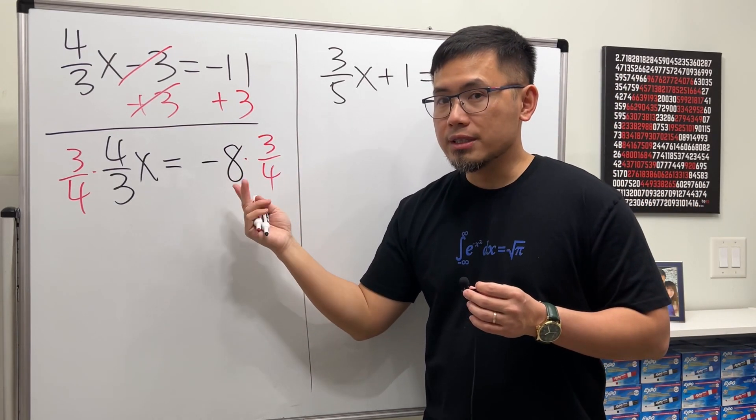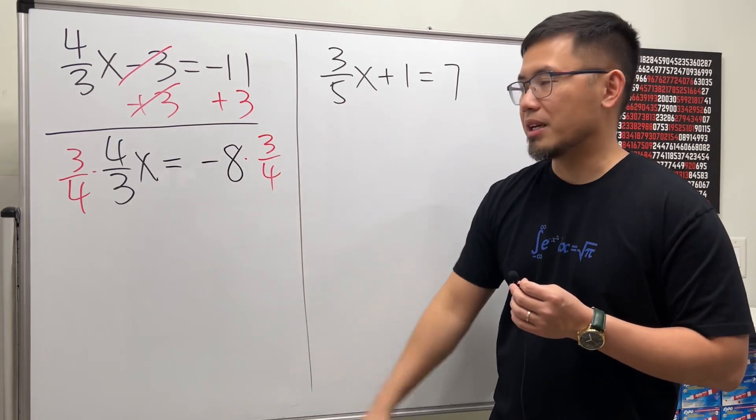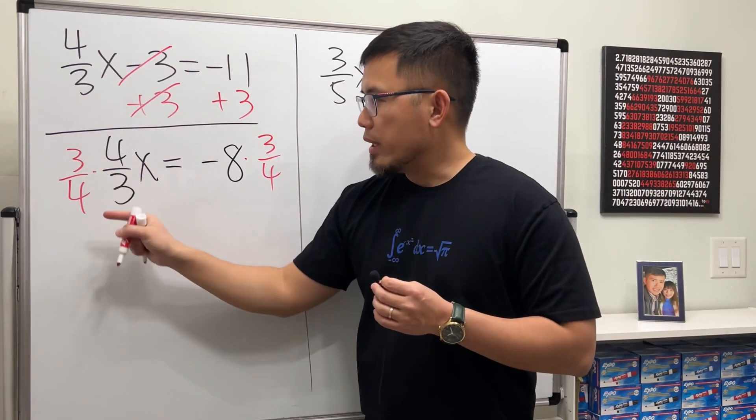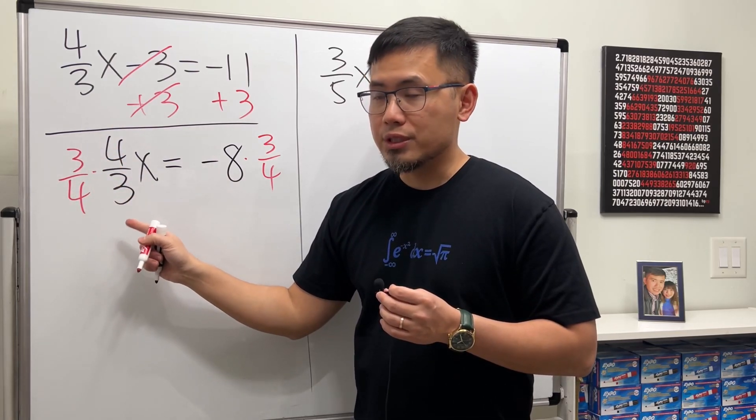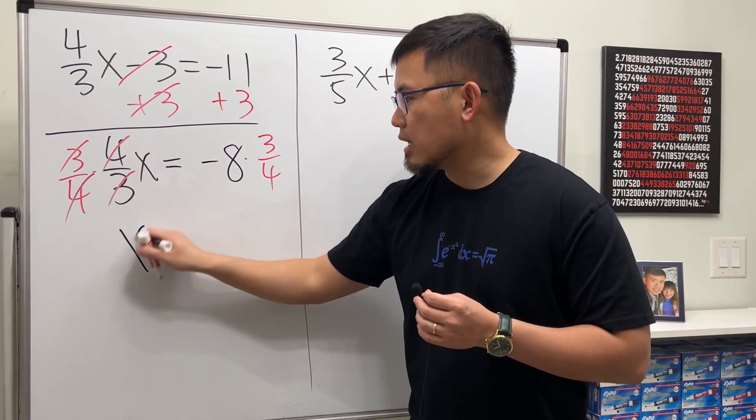The order of multiplication doesn't matter. It has a negative here, so that's why I put it at the end. This way you see that we can cross reduce: 3 and 3 cancel, 4 and 4 cancel, and we just get x by itself.